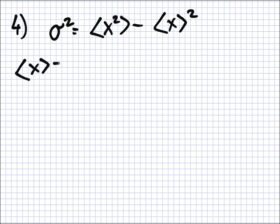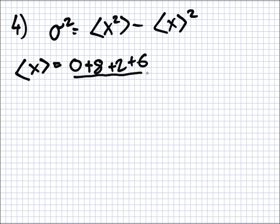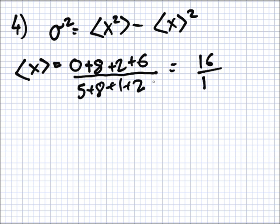That will be zero times five, plus one times eight, plus two times one, plus three times two, all over five plus eight plus one plus two. So that's 16 over 16 — no, not six — 16 over 16. So that's one. Well, that's nice and convenient.